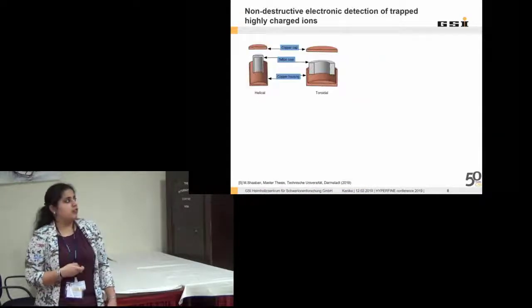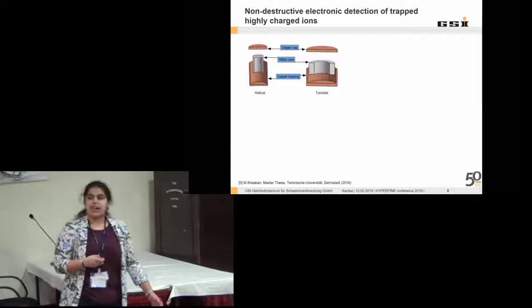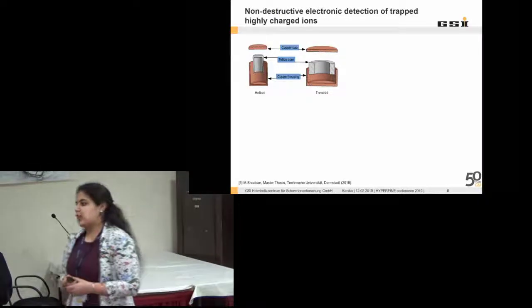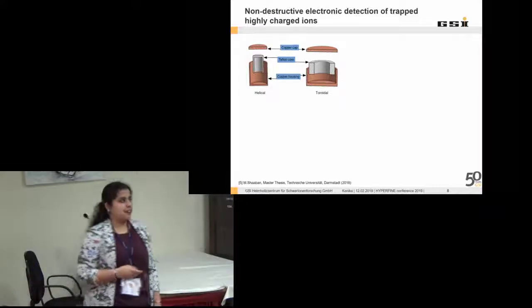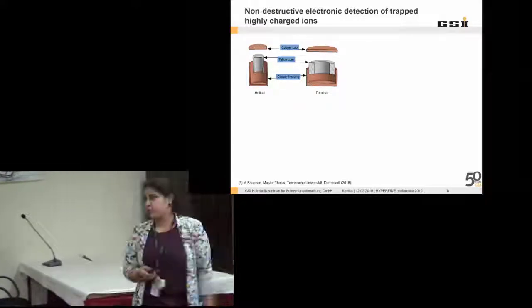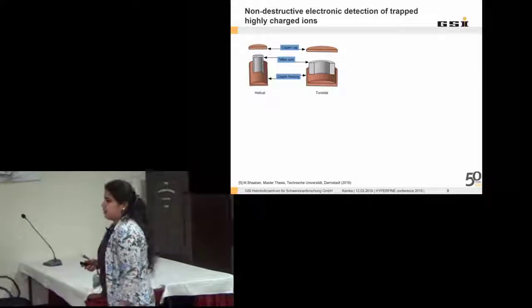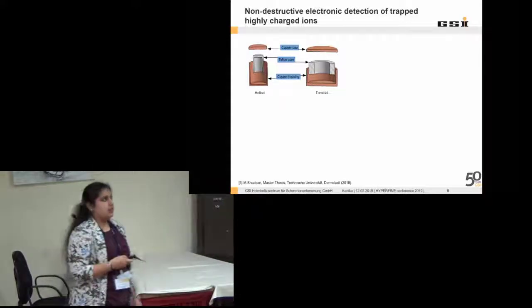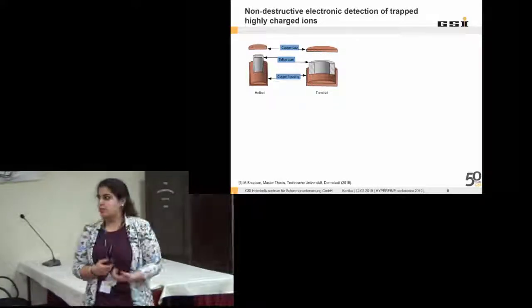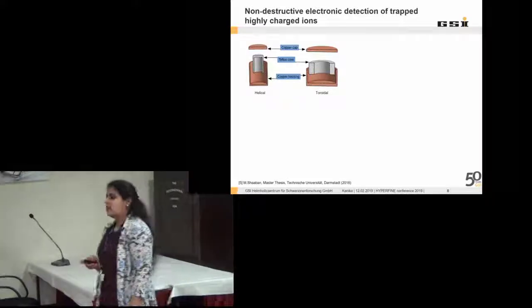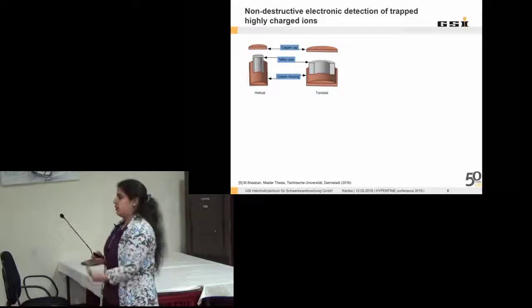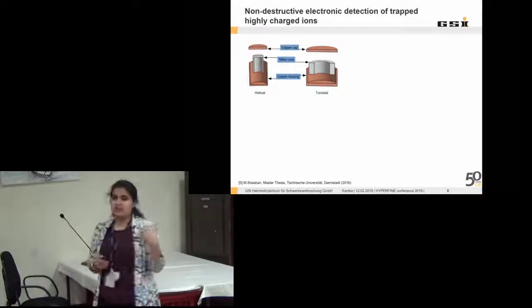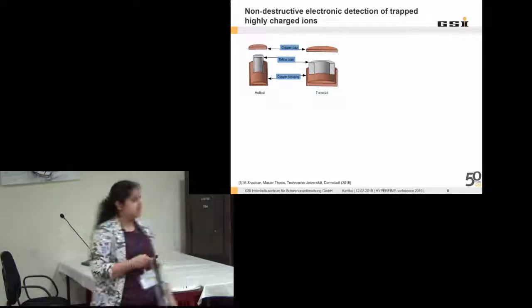Coming to the non-destructive detection technique. This is for the measurement of cyclotron frequency. We have different types of resonators which we produce for the experiment. We can make them on our own. That can be helical or toroidal, and we can also use superconducting wires or non-superconducting wires for the measurements. We have approximately eight types of resonators and we select the particular combinations that we need.